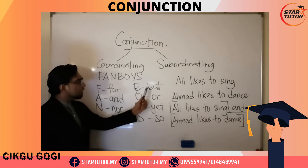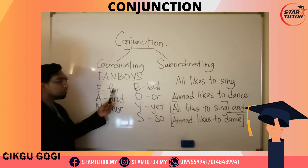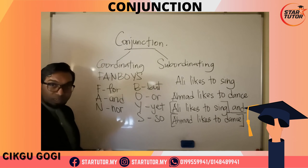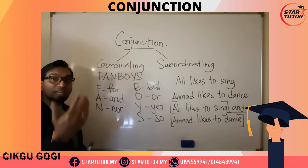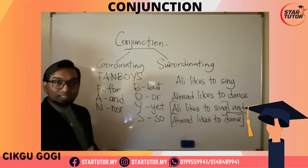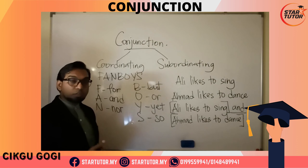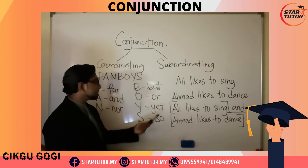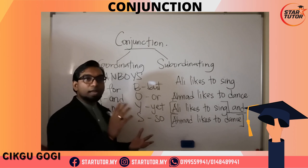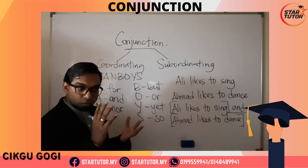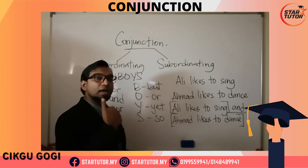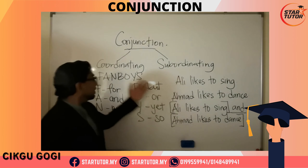Each of the FANBOYS conjunctions has a different usage. 'For' is used when you want to talk about purpose. 'And' is used when you want to add extra or additional information. 'Nor' is used to say that neither noun has anything to do with the verb in the sentence. 'But' is used to talk about something contradicting or showing a contrast. 'Or' is used to present choices. 'Yet' is used to talk about something that is yet to happen or has not taken place yet. 'So' is used to talk about consequence — the effect of a verb. These are the coordinating conjunctions.